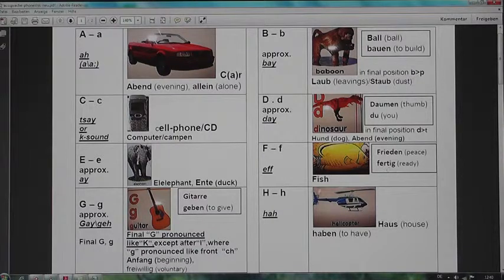G, in a word like G, like guitar. Gitarre, geben, to give. Final G pronounces like K, like in Anfang, beginning. Or after L where G pronounces like the front ch. Freiwillig, voluntary.